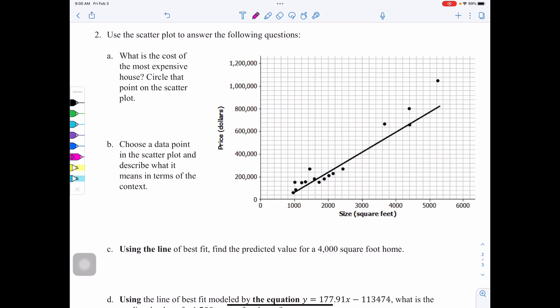Now let's look at example two. Use the scatter plot to answer the following questions. You're going to see we have the scatter plot that we looked at on the first page, but now the line of best fit has been added to that. We are going to use it to answer some questions. Question A says, what is the cost of the most expensive house? Circle that point on the scatter plot.